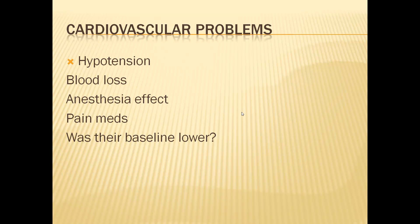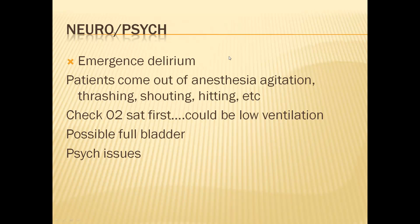Cardiovascular problems that arise post-operatively: number one is hypotension. The patient just had anesthesia and pain medications, both of which can reduce blood pressure and cause hypotension. Blood loss during surgery is another factor. The baseline is critical here — knowing what's normal for this patient matters because they're asleep and can't tell you. That's why you refer back to the pre-operative vital signs.